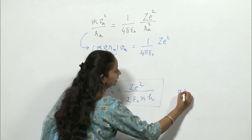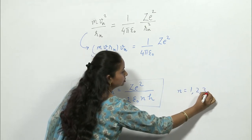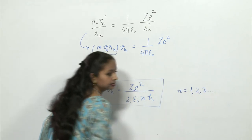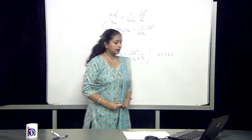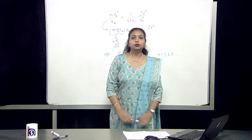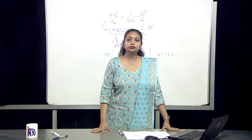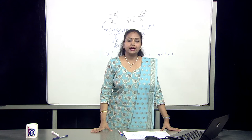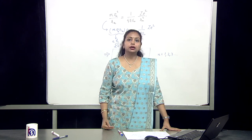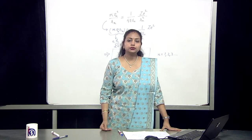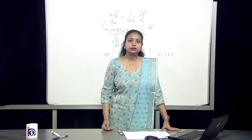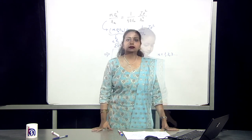Again, n = 1, 2, 3 and so on. So the velocity of the electron is found to be inversely proportional to n. As we go to outer orbits, the velocity of the electron decreases.